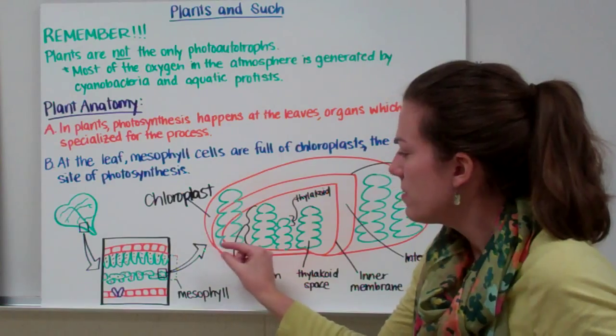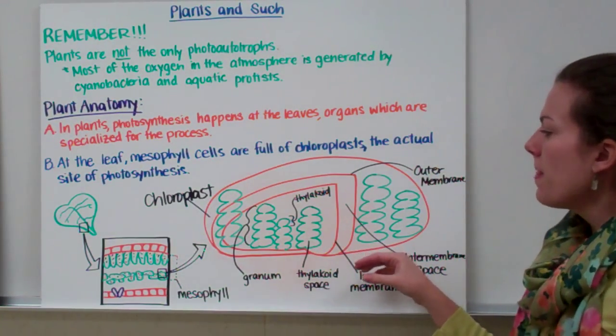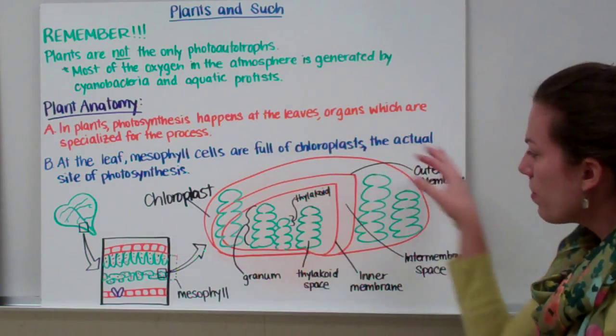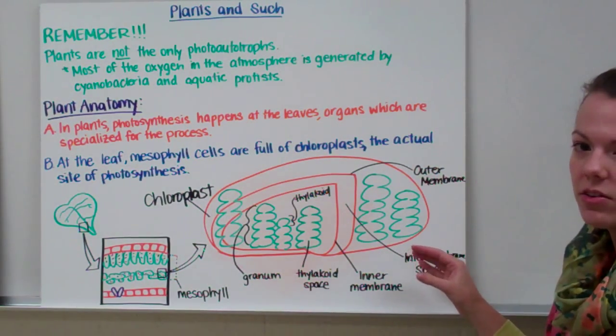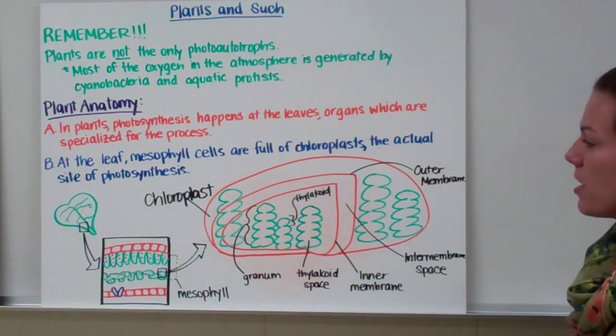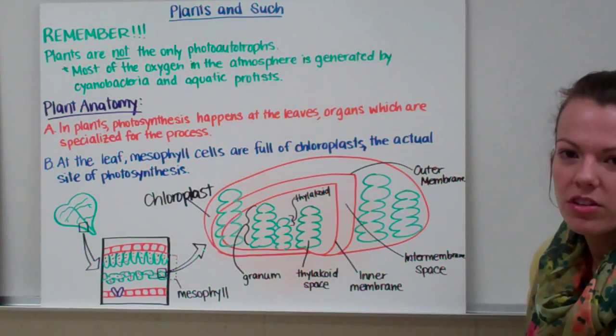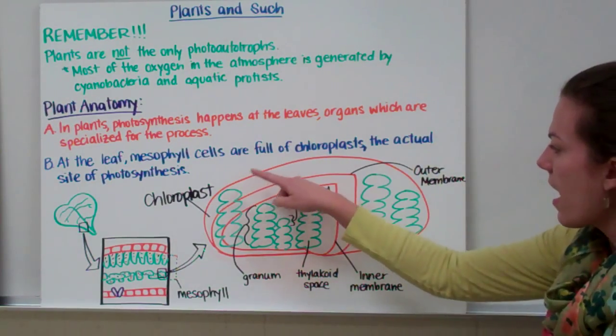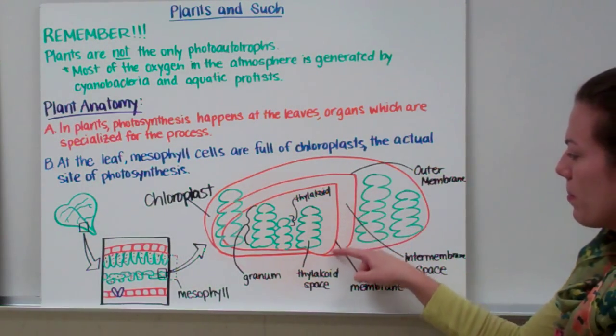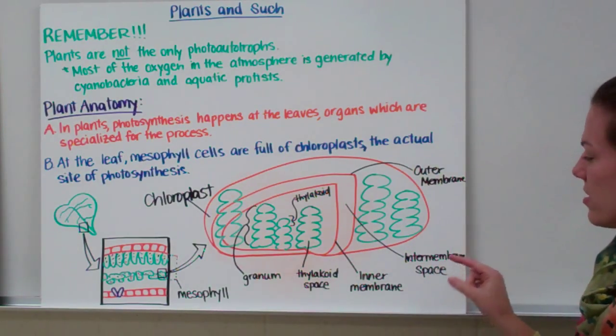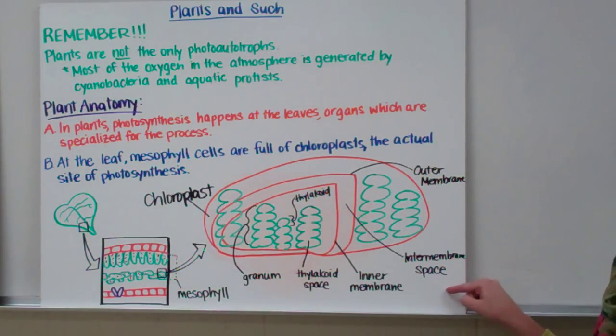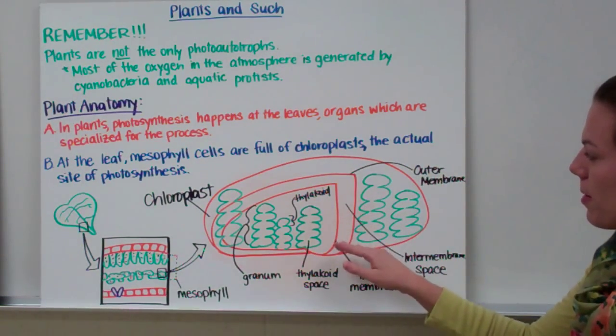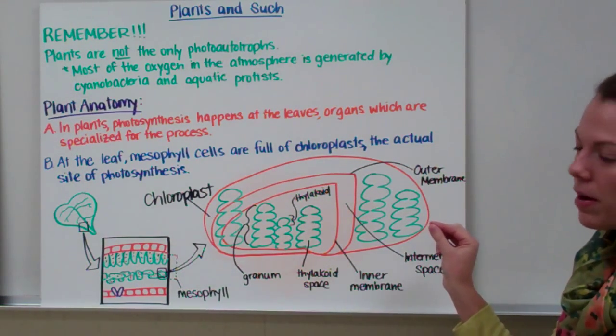So if we take one of these mesophyll cells and zoom into it, we can see that it has chloroplasts inside of it. And the chloroplast actually looks like this. This is just a rough sketch of a chloroplast, but you'll see that the chloroplast is more than just a blob with stacks inside of it. It has two membranes. It has an outer membrane, and then it has an inner membrane. Between those two membranes is called the intermembrane space. The structure is similar to a mitochondrion. In between those two is our inner membrane space.